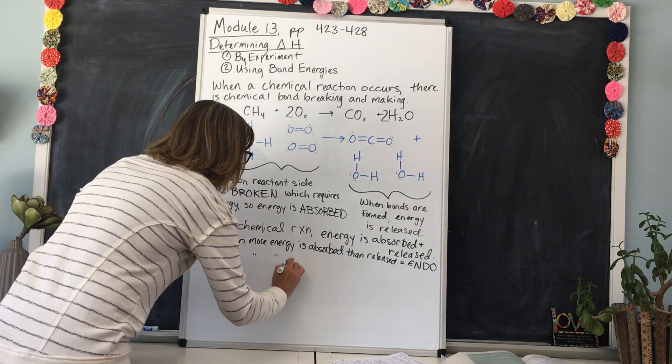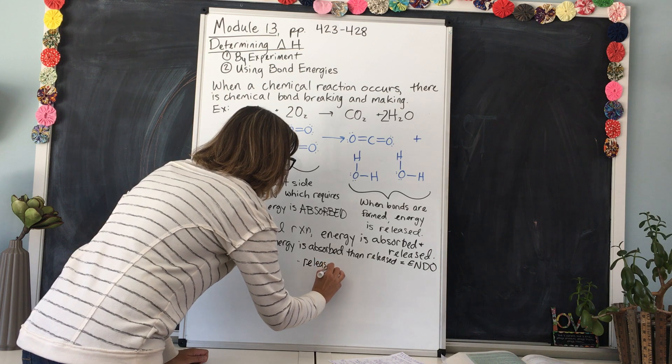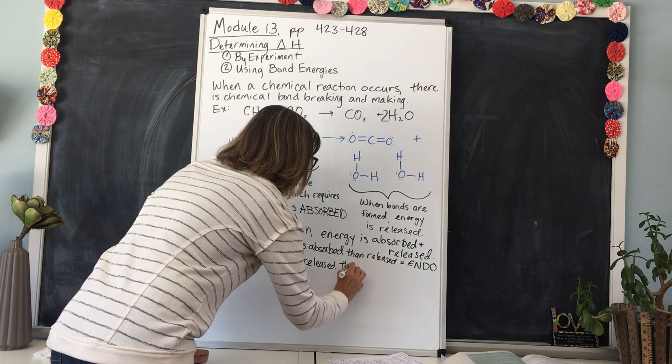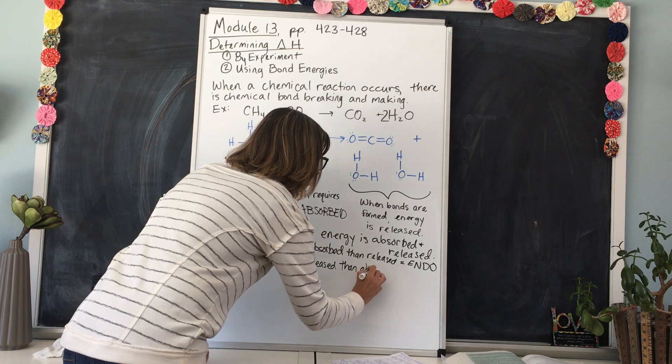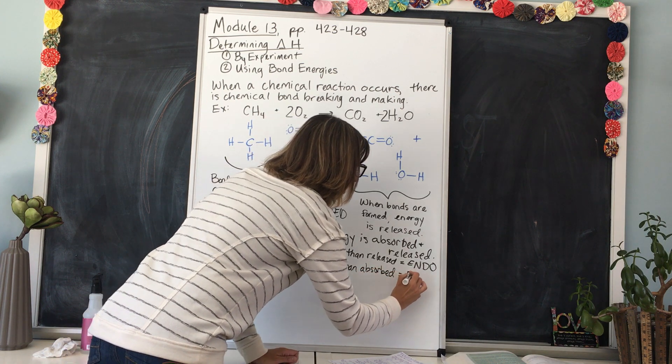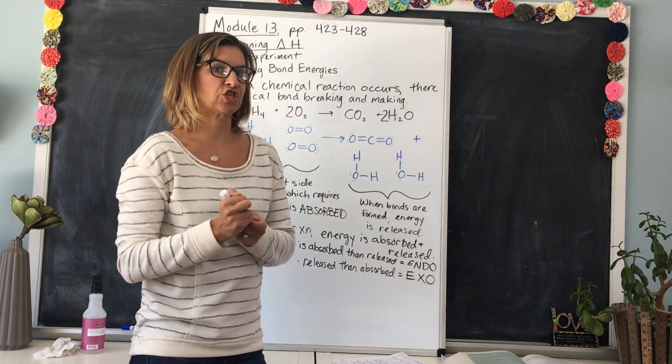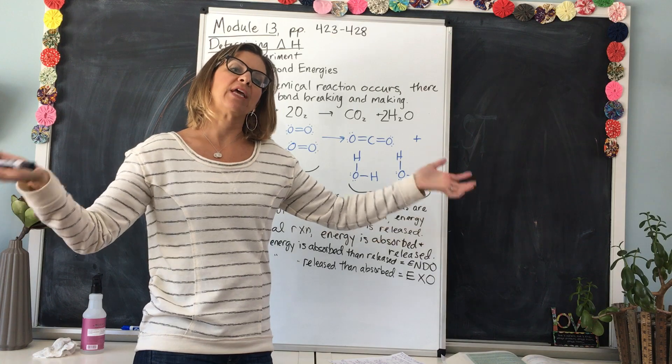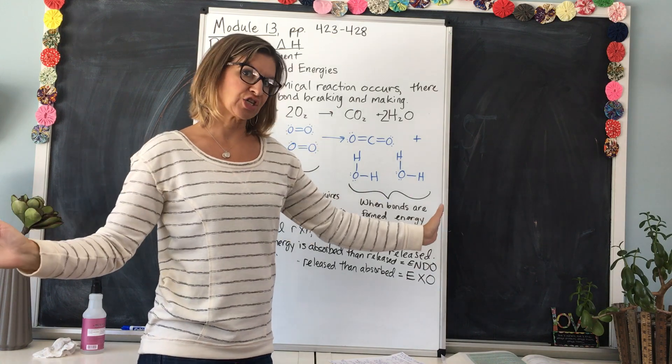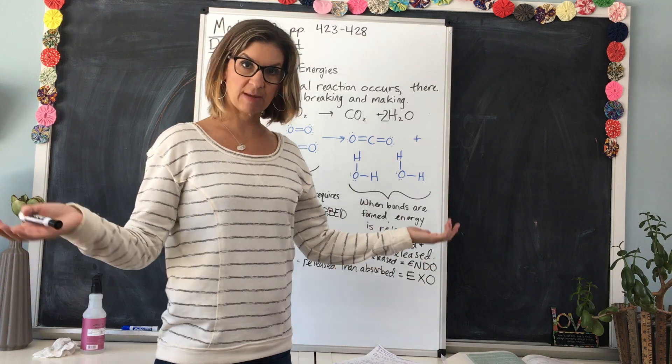When more energy is released than absorbed, that is when we have an exothermic reaction. When we are giving off more energy than we have taken in, then the reaction is exothermic and it's producing heat and sometimes light.